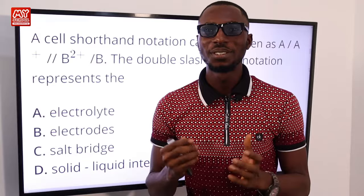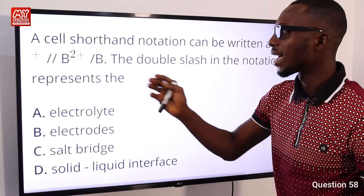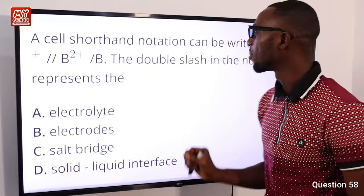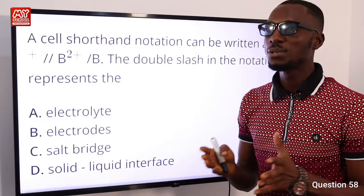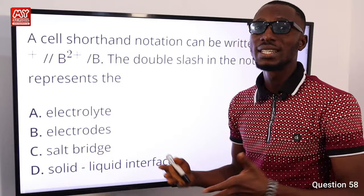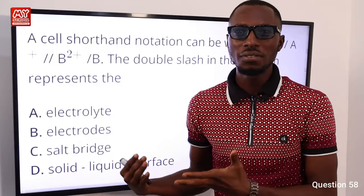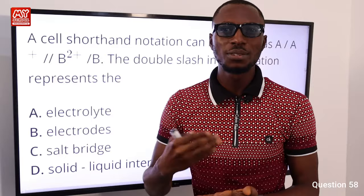Question 58: A cell shorthand notation is written as A/A⁺//B²⁺/B. The single slash represents the boundary between the electrode and the solution. The double slash represents the salt bridge or semi-permeable membrane. Option C is correct.